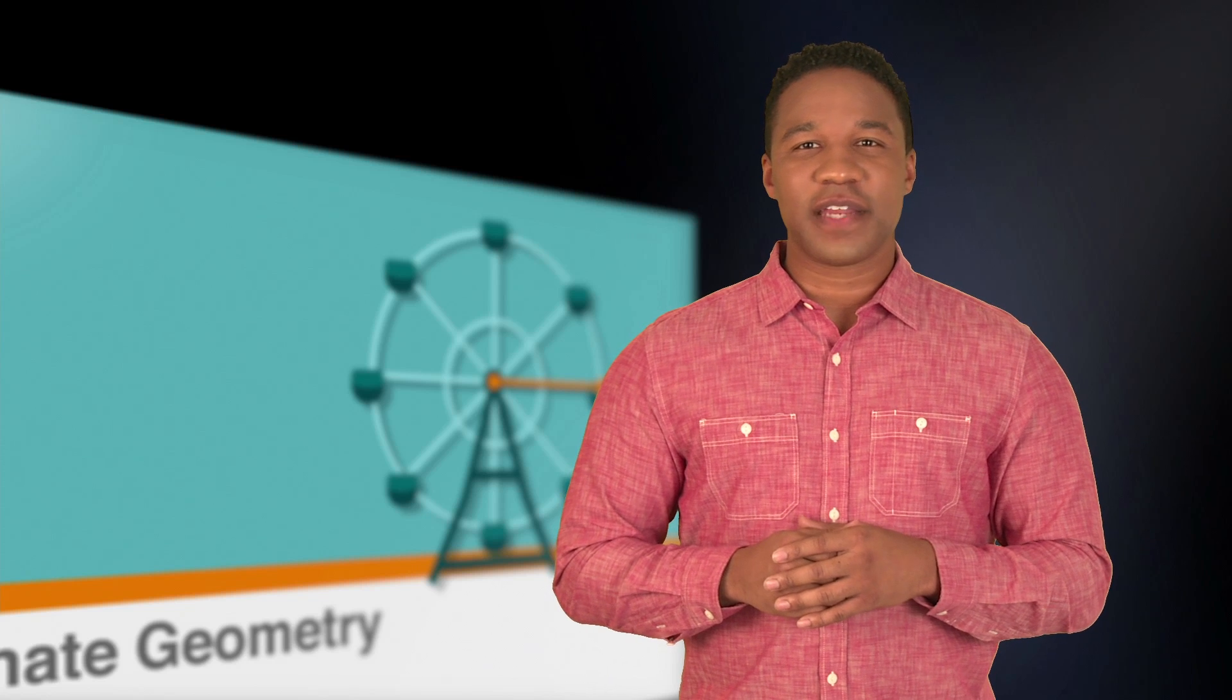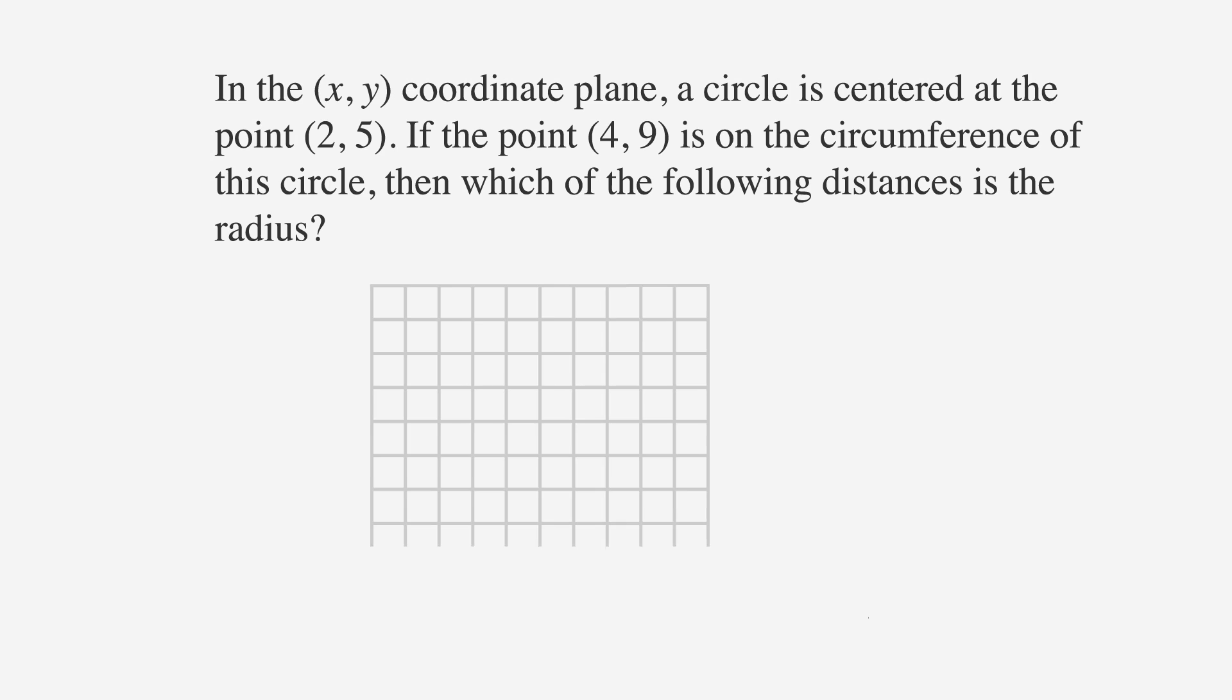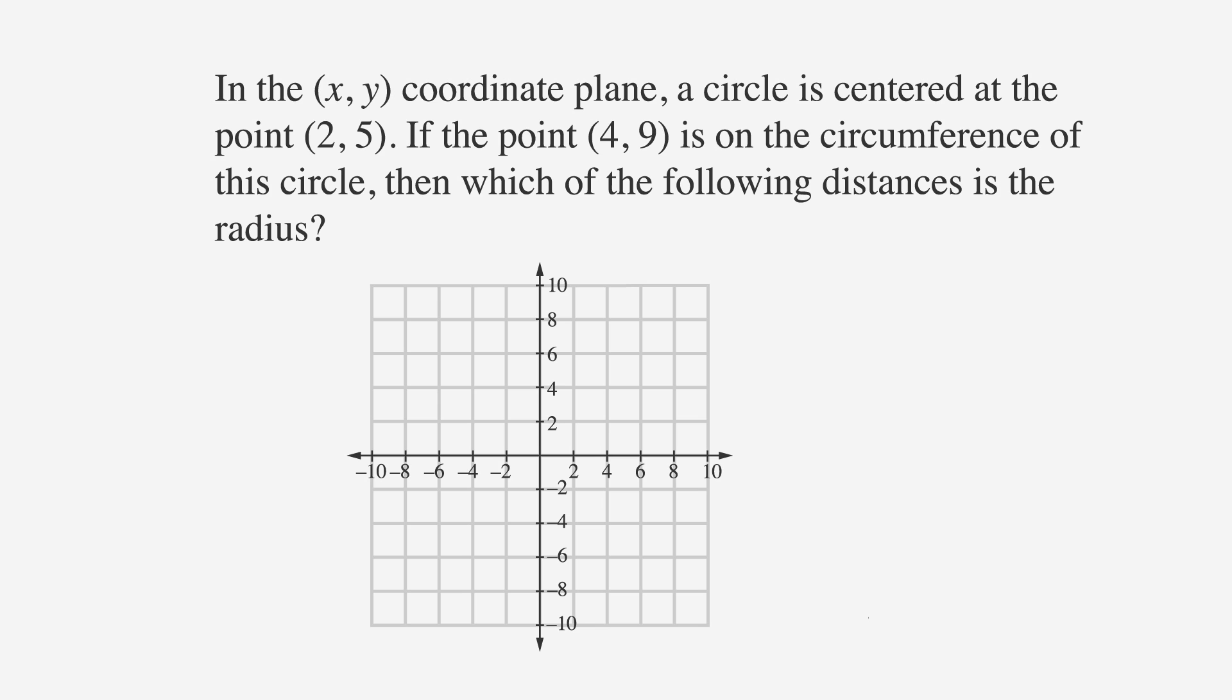In the xy coordinate plane, a circle is centered at the point two comma five. If the point four comma nine is on the circumference of this circle, then which of the following distances is the radius?